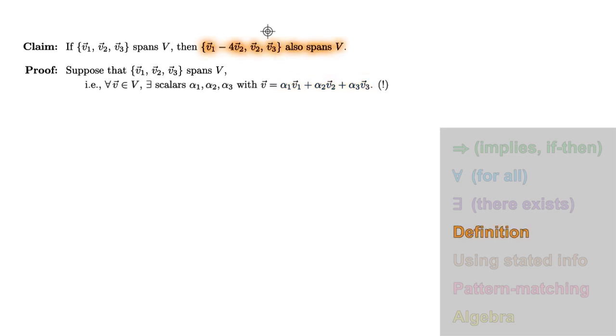We should also use the definition of span to restate what we need to show. This doesn't go in our proof, as we don't know that it's true yet, but it will guide our proof, so we definitely want to write it down, again being careful to apply the definition in context. Every v in V can be built as a linear combination of our other collection, v1 minus 4v2, v2, v3, in symbols. For all v in V, it's okay to use the same letter as we did in the last definition here, because we'll be talking about the same vector in each definition.